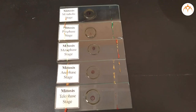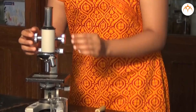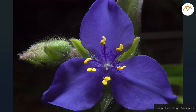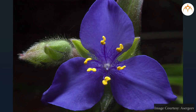Now let us see the requirements. We need permanent slides of mitosis and meiosis, and a compound microscope. Onion roots can be easily grown and they can be used for mitosis. For meiosis, anthers from the flower buds or cells from the testes or insects like grasshopper are suitable materials.